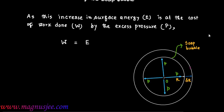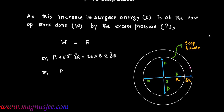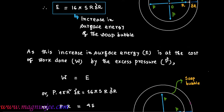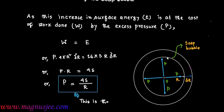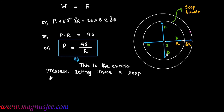Since the increase in surface energy E is at the cost of work done W by the excess pressure, we write W = E. Therefore, p·4πr²·delta r = 16πSr·delta r. Simplifying: p·r = 4S, and therefore p = 4S/r, which is the excess pressure acting inside the soap bubble.